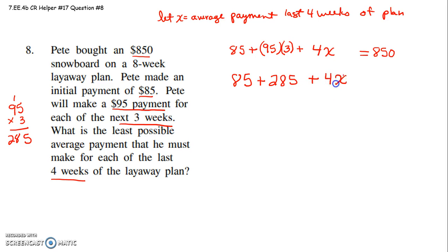So he makes an initial payment of $85, and then he makes payments of $285. And then he still is going to have four weeks of some amount of money. And at the end of all that, he has to pay off that total of $850. All right. So now I have to take my $285, add that to the $85 he initially paid. I believe that gets me to $370.